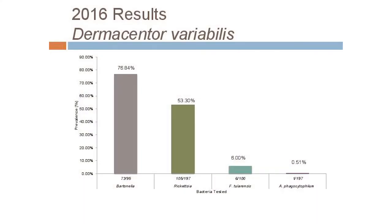In 2016, we set out to answer what diseases we should be concerned with in spring. We tested four different bacteria in Dermocenter: Bartonella, Rickettsia, Francisella tularensis, and Anaplasma phagocytophilum. We got positive results for all of these — amazing and concerning at the same time. Bartonella had very high prevalence, though we suspect there may be false positives there. Rickettsia was also very prevalent, with some Francisella tularensis and some Anaplasma phagocytophilum also detected.